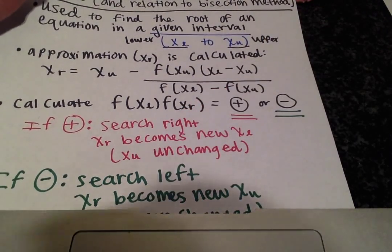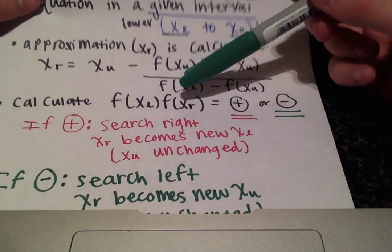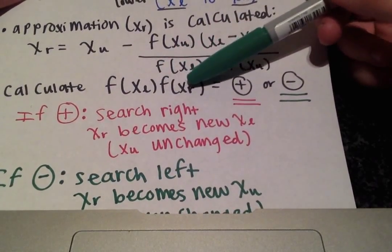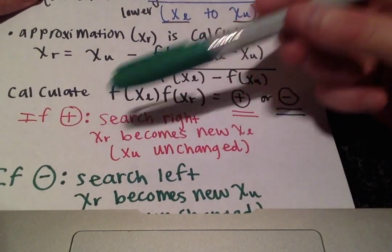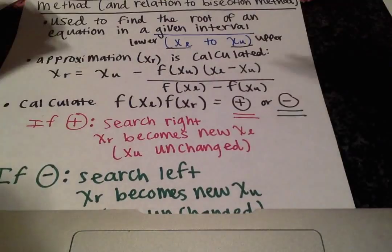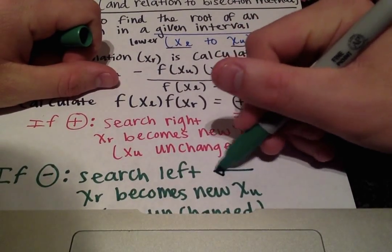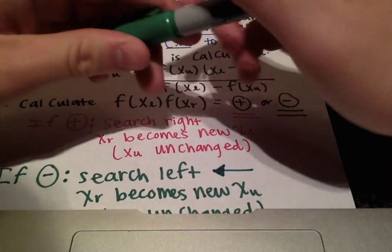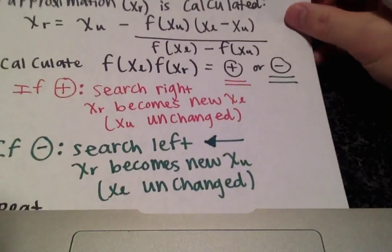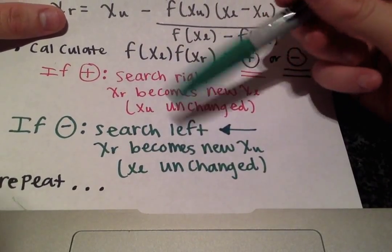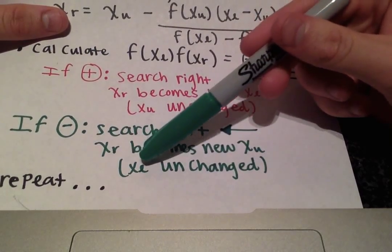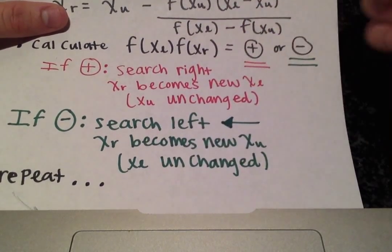And on the other hand, if the product of f of x_l and f of x_r is a negative value, then we'll actually be searching to the left. So x_r will become the new upper limit and this time the lower limit will remain unchanged.